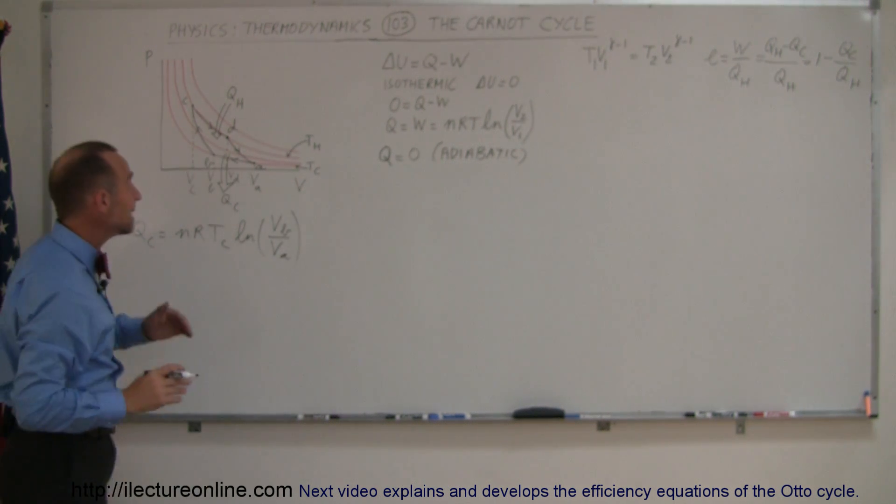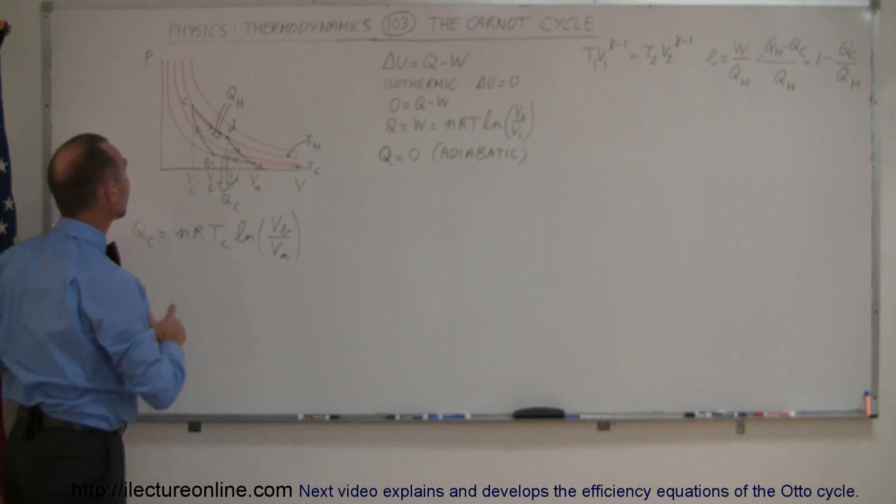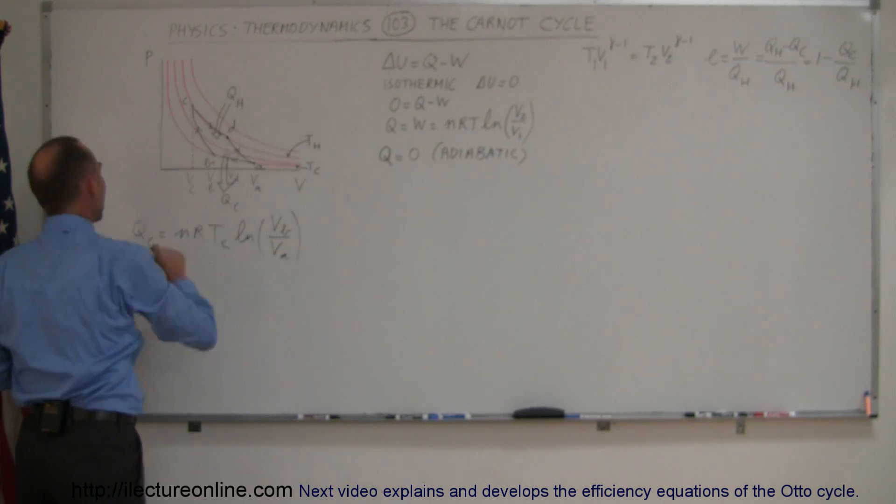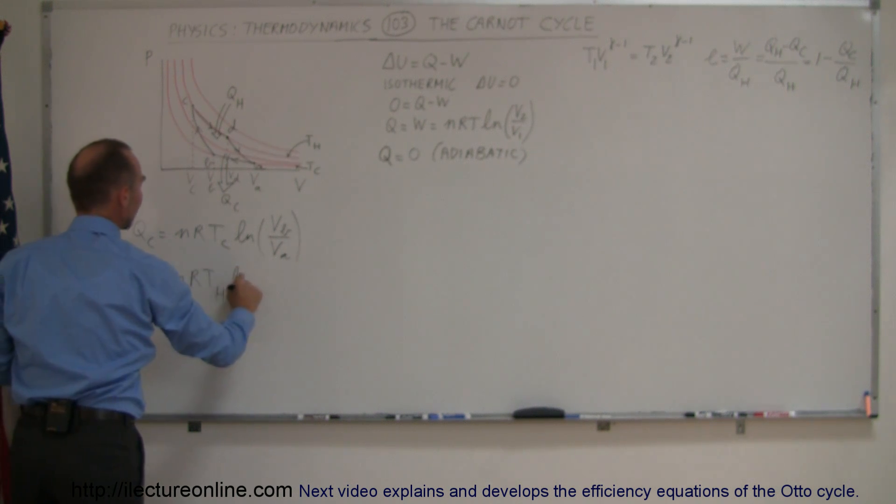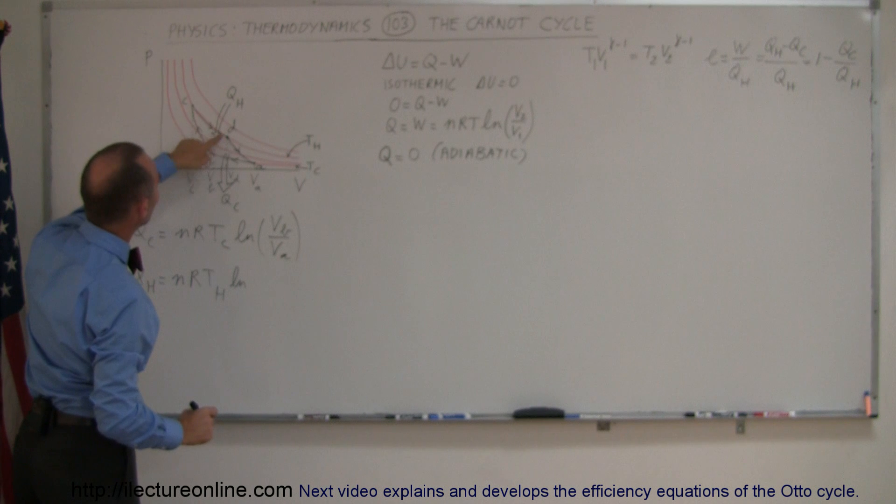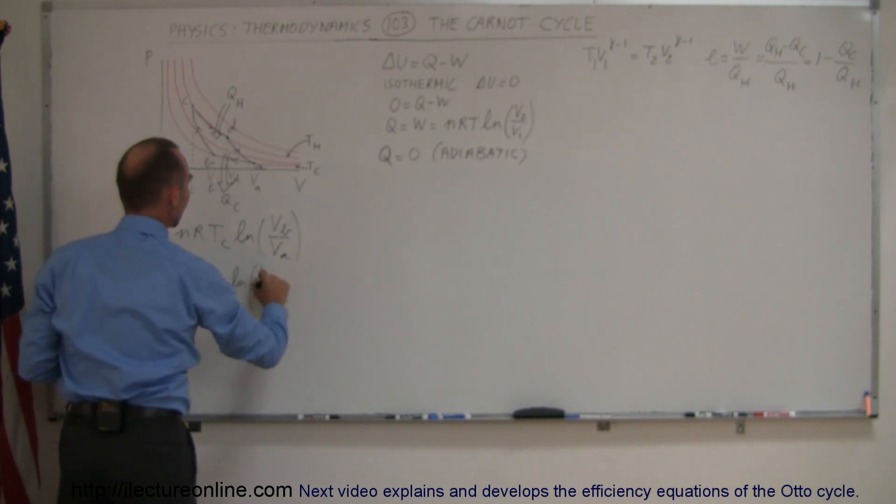Now, to find the heat being put into the system or into the cycle at the hot temperature, we have Q_H, and that is equal to nR times temperature H times the natural log of V_final over V_initial, so it would be V_D over V_C.